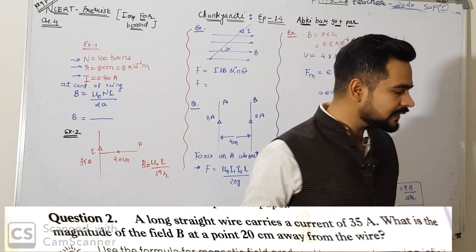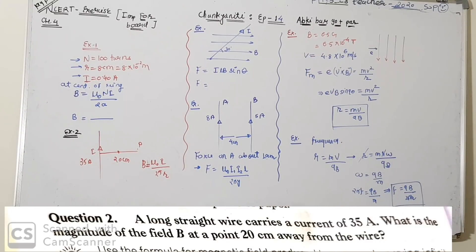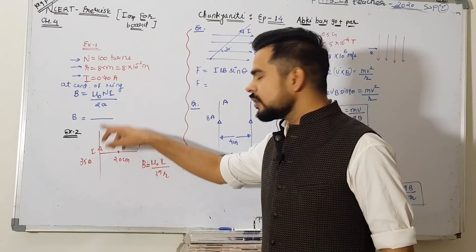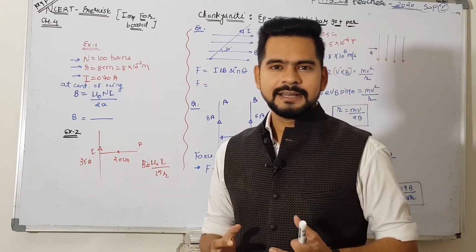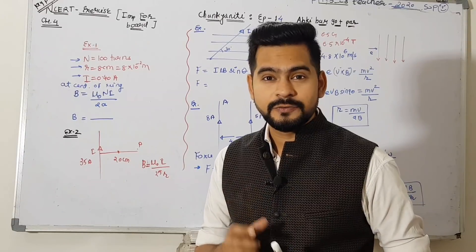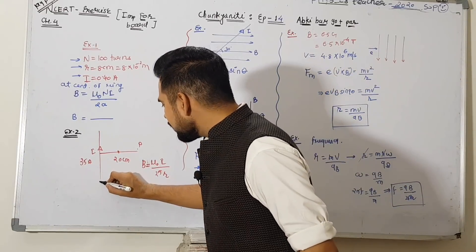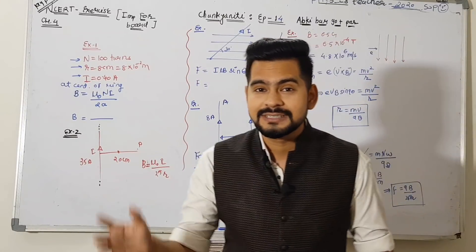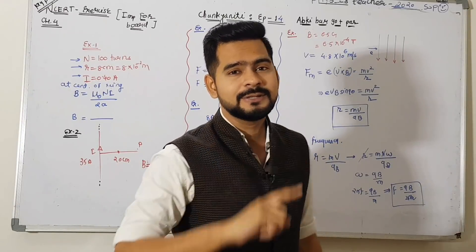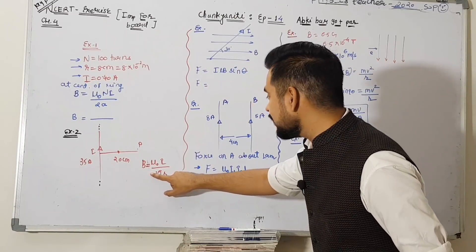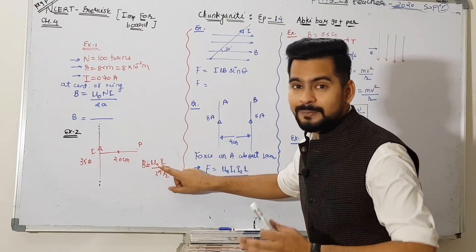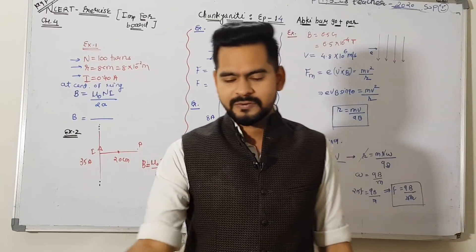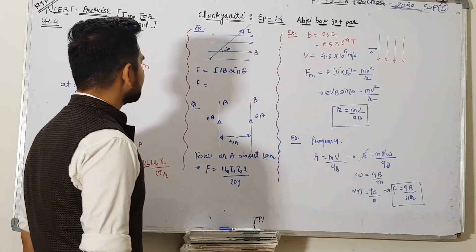Example number 2 dekhi - woh bhi aapko bata deta hoon. NCRT ka hi uthaya hua hai saara question. Jo dar lagta hai textbook ke kaise question aate hain - dekhi mama type question: 35 ampere ki current flow ho rahi hai, wire diya hai. Jab tak mention na kare ki wire fixed length ka hai, you have to consider the wire is of infinite length. Wire infinite length ka hai toh uski wajah se magnetic field ka formula hai: B = μ₀I / 2πr. Mu naught hai, I hai, R hai - 20 centimeter. Rakhho aur answer lo.